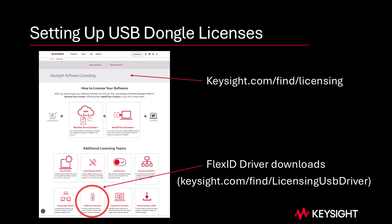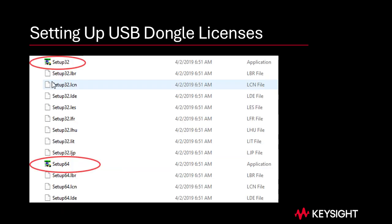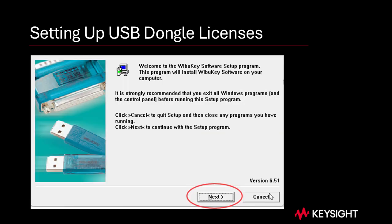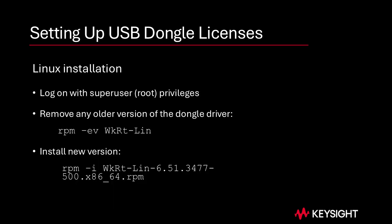Or you can go to Keysight.com/find/licensing and click on the icon labeled FlexID driver download. Note that the installer files are provided in an archived format — .rpm for Red Hat Linux and .zip for Windows. Extract the files to a convenient location on the machine. Execute setup64 on 64-bit Windows, or setup32 on 32-bit Windows. Follow the installer's prompts, accepting the default values. On Red Hat Linux, install the package using the RPM tool.